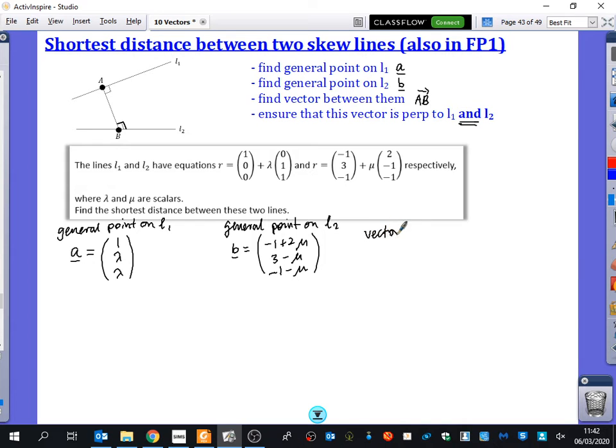And so a vector between the lines, a general vector between the lines, is going to be AB, which is just B minus A. So it's minus 1 plus 2 mu minus 1, 3 minus mu minus lambda, minus 1 minus mu minus lambda. So I can just simplify that slightly to minus 2 plus 2 mu, and then the rest stay the same.